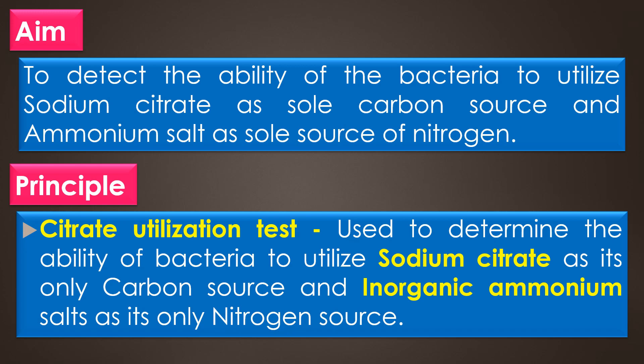Principle: the citrate utilization test is used to determine the ability of the bacteria to utilize sodium citrate as its only carbon source and inorganic ammonium salts as its only nitrogen source. The citrate utilization test can be used to differentiate the coliforms such as Klebsiella origins, which occurs naturally in the soil and aquatic environment, from the fecal coliforms such as E. coli, whose presence would be indicative of fecal contamination. This test shows a positive reaction for Klebsiella origins and a negative reaction for S. recharcolli, allowing us to differentiate between the two organisms.